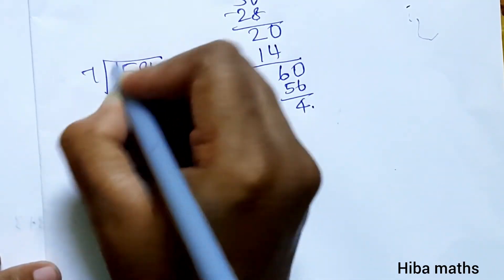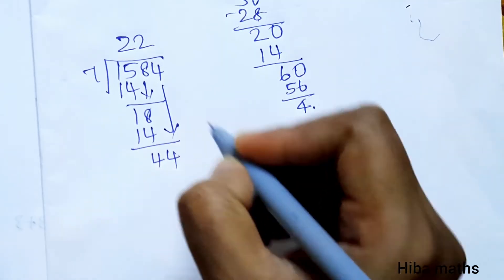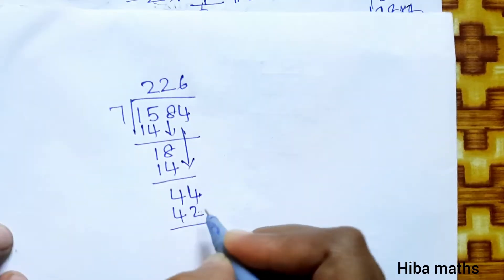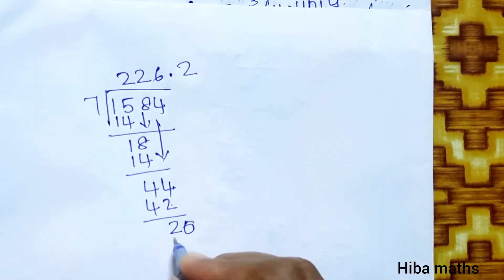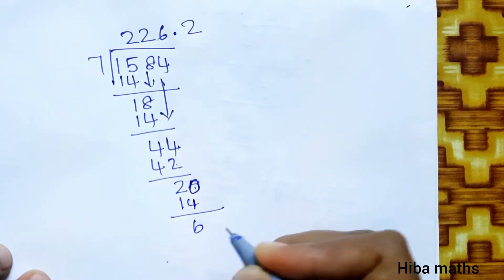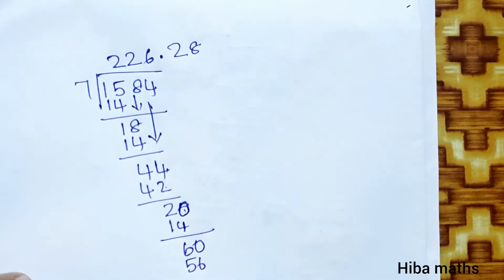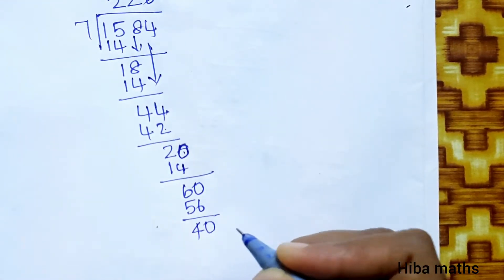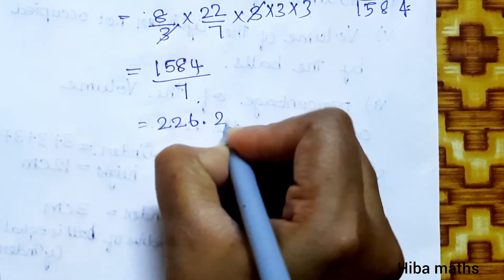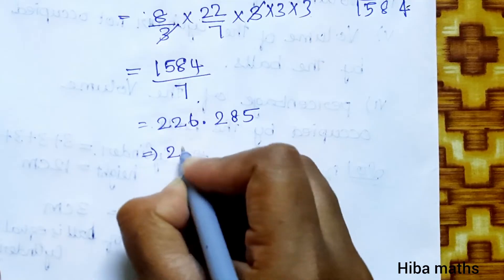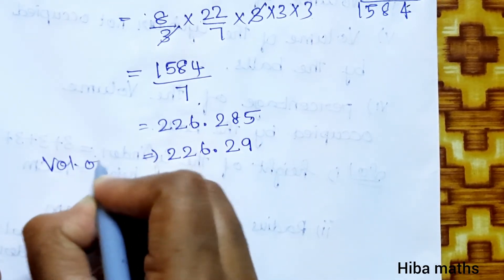1584 ÷ 7 = 226.285. Rounding off: since the digit after is 5 or greater, we round up. Volume of 2 balls ≈ 226.29 cm³.